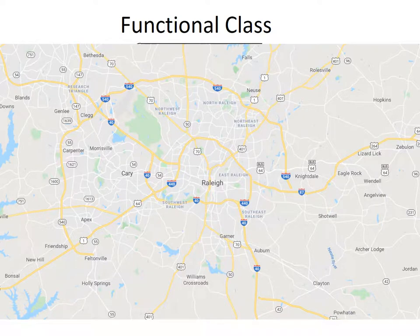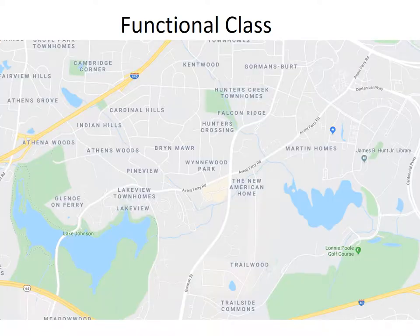As we zoom in, we begin to see other roads that connect to these arterials. These collector roads are shown in white. Zooming in even further, we can see thinner white lines representing local roads that help serve final destinations to businesses and residences.